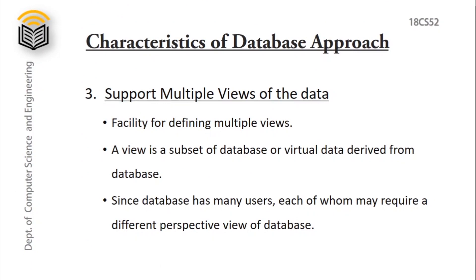Next characteristic is multiple views of the data. A good DBMS has facilities for defining multiple views. A view is a subset of the database or virtual data derived from the database; it is not explicitly stored. Since a database has many users, each may require a different perspective or view of the database. Consider an example of a bank database: both customers and the bank use the same database, but the view for the customer and the bank is different.